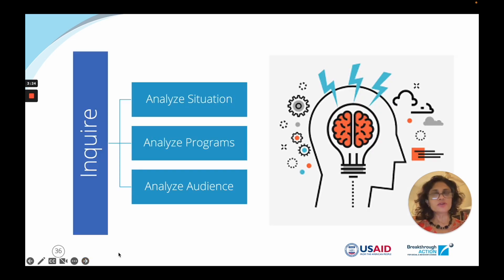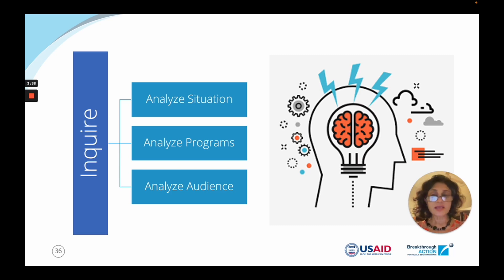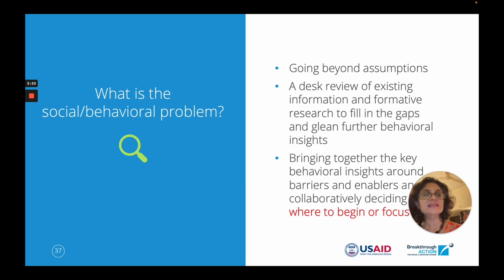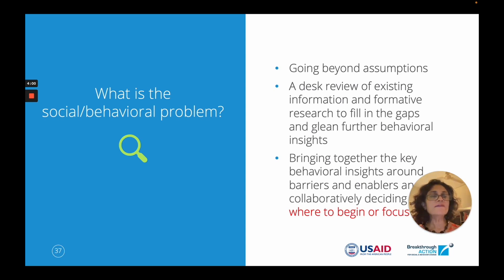The first stage is really about inquiry: analyzing the situation, analyzing programs currently addressing teenage pregnancy, understanding program capacities and shortcomings, and analyzing our audience. We want to go beyond assumptions — not sit at a desk and make up what we think. We do a desk review of existing information and formative research to fill gaps and glean further behavioral insights. Then we bring together key behavioral insights around barriers and enablers and collaboratively decide where to begin.